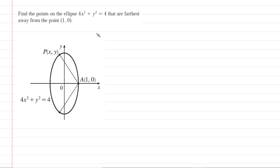The first thing we need to do in answering this question is to make a sketch of the scenario. We would want to sketch the ellipse first. We have this equation: 4x squared plus y squared is equal to 4. One way to sketch the ellipse is to find the intercepts.